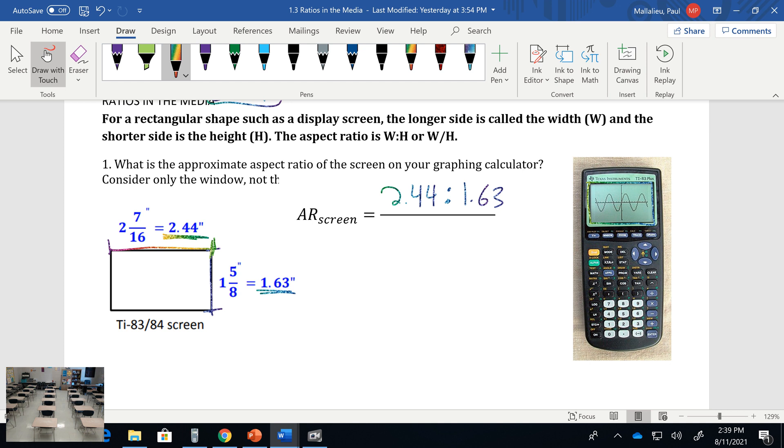You can write that as 2.44 with your aspect ratio symbol and then 1.63, which gives us the same information of width and height. Or you could write that as 2.44 over 1.63. Both of them give you your aspect ratio.